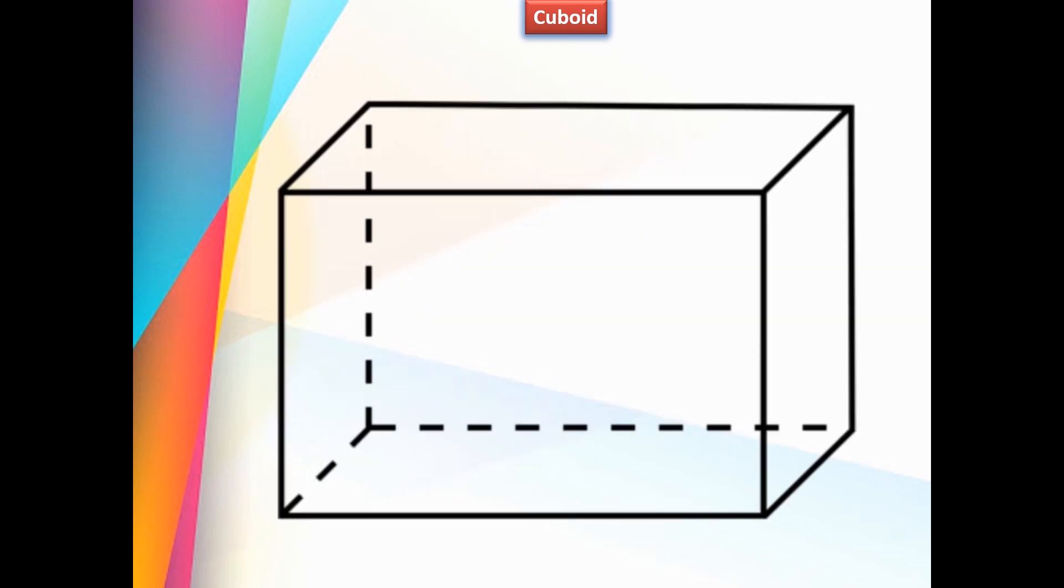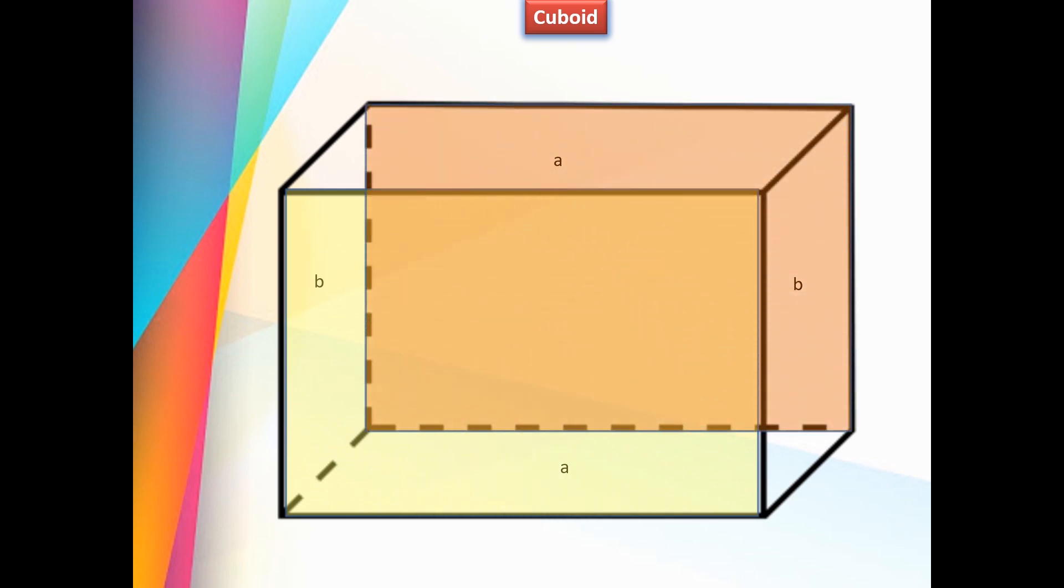In a cuboid, opposite surfaces are equal. A and A are opposite to each other, B and B are opposite to each other, C and C are opposite to each other. Therefore, opposite surfaces are equal in a cuboid. An edge is formed where two surfaces meet.